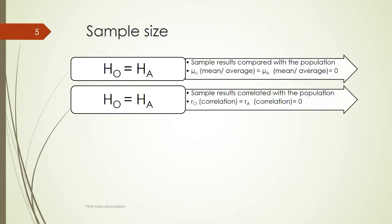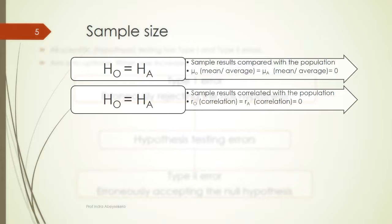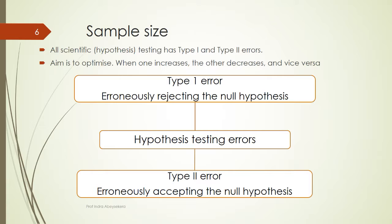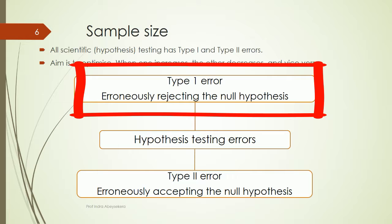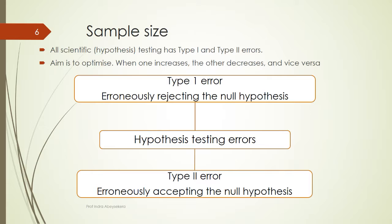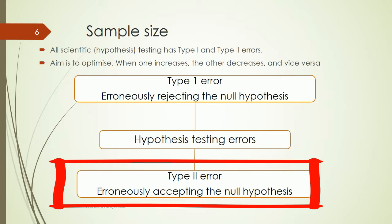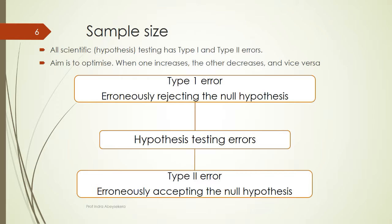We have the null hypothesis and alternative hypothesis, and we can compare the two — comparing the means and averages, as well as the relationship or correlations. When we test the hypothesis, there can be two types of errors. The hypothesis is tested to falsify the null hypothesis. Type 1 error is where we erroneously reject the null hypothesis, and Type 2 error is where we erroneously accept the null hypothesis.